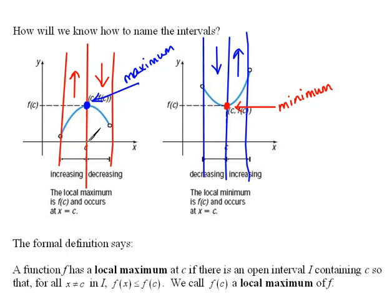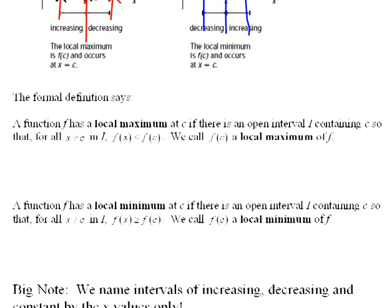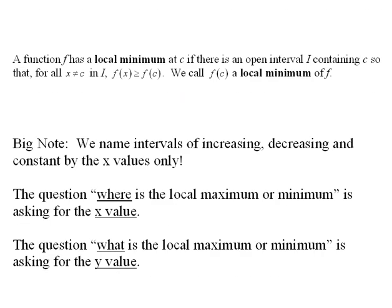When we talk about areas, intervals of increasing and decreasing, we're saying things like from here to here, this graph is increasing. And then from here over to here, it's decreasing. So we label those intervals using only the x values and nothing else. So that is hugely important.